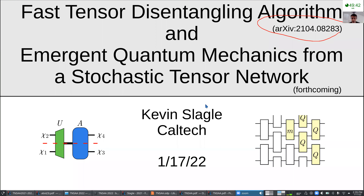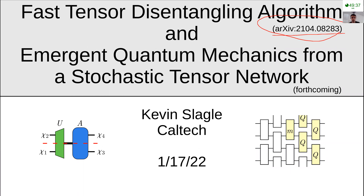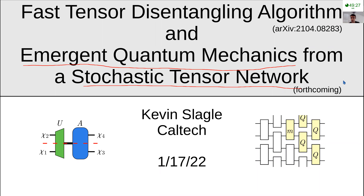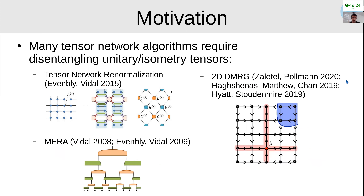The first part is based on archive work and the second part of the talk will be based on forthcoming work with John Preskill on an emergent quantum mechanics model based on a stochastic tensor network. The motivation for the first part: many tensor network algorithms require some sort of disentangling unitary or isometry tensor within the algorithm.